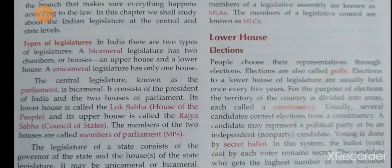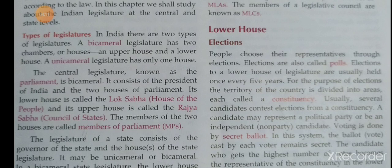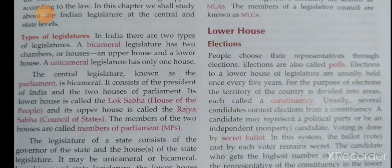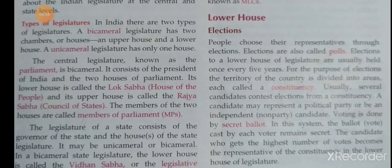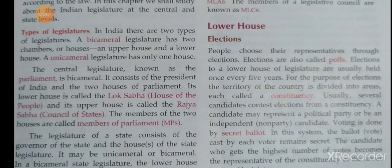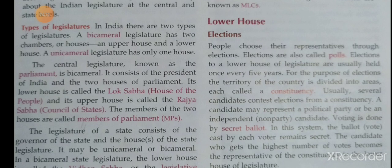Voting is done by secret ballot, and the ballot cast by each voter remains secret. The candidate who gets the highest number of votes becomes the representative of that constituency in the lower house of legislature. Elections to the Indian legislature are conducted by the Election Commission.